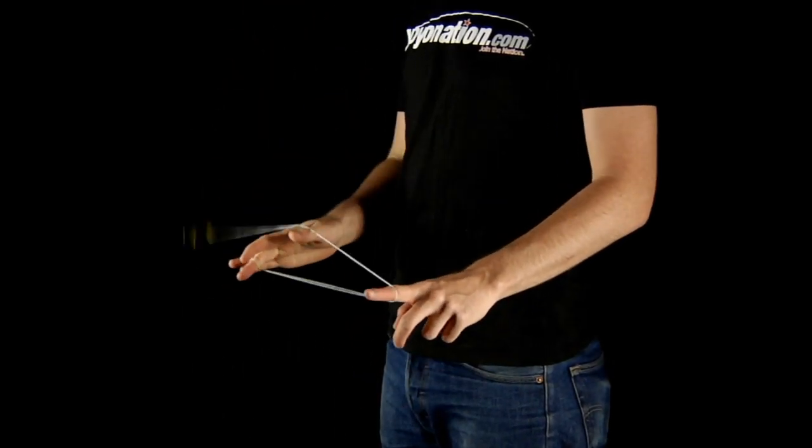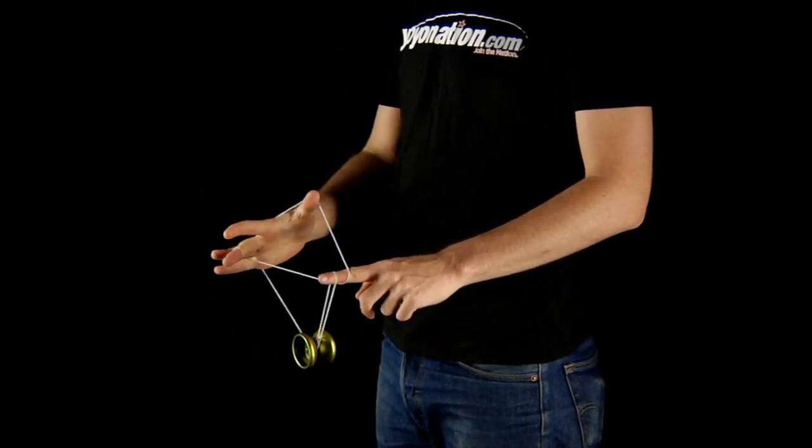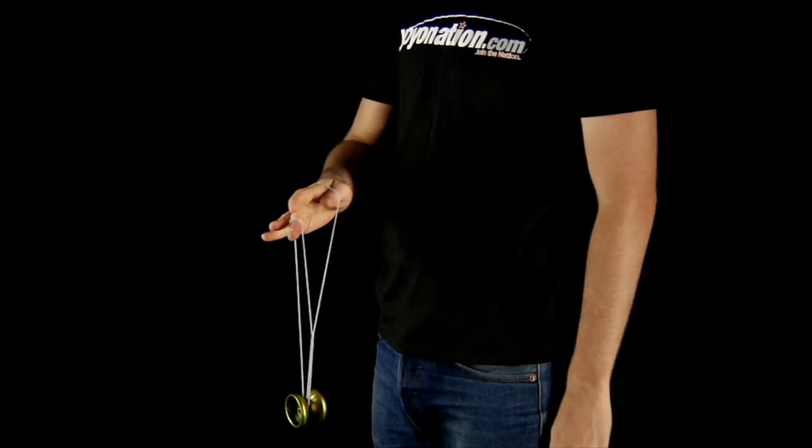Begin with the spirit bomb mount. Remove your non-throwhand from the mount and let everything hang on your throwhand.